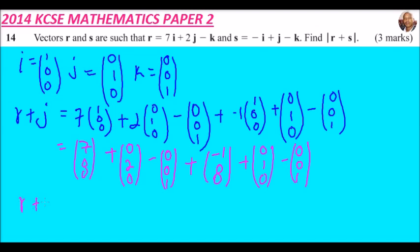Now we add the components. For the first component: 7 + 0 - 0 + (-1) + 0 + 0 = 6. For the second component: 0 + 2 - 0 + 0 + 1 + 0 = 2. Wait — actually we get the third component: 0 + 0 - 1 + 0 + 0 - 1 = -2. So r + s equals the column vector (6, 2, -2).